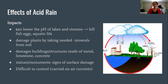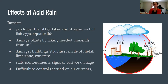The impacts of acid rain could be that it lowers the pH of lakes and streams, and when it does that, it can kill fish eggs or aquatic life. It can also damage plants by taking nutrients out of the soil that the plants need — shown here where trees were killed by acid rain. It can also damage buildings and structures made of metal, limestone, or concrete due to a chemical reaction, with signs of surface damage on statues and monuments. The big problem is it's very difficult to control acid rain because the contaminants are carried on air currents, and those air currents carry those contaminants to other locations, not necessarily where the pollution was emitted into the air.